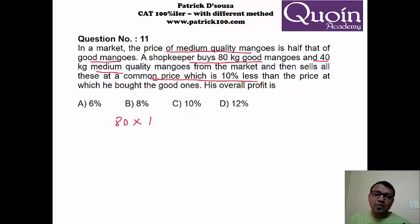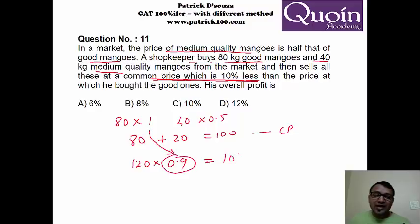Let's go to one more sum. Price of medium quality mangoes is half that of good mangoes. Shopkeeper buys 80 kg good mangoes and 40 kg medium mangoes. And they said the common price which he sells is 10% less. A good way of solving is to assume the price of good mangoes as 1.